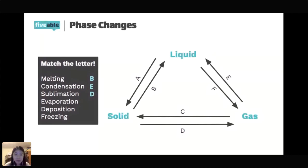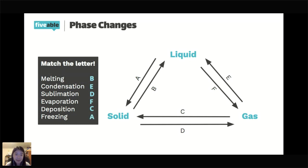Evaporation is F — going from a liquid to a gas. When you boil water, some of that water evaporates into water vapor. Deposition is C — going from a gas to a solid. And finally, freezing is A — going from a liquid to a solid. When you freeze water, it turns into solid ice.